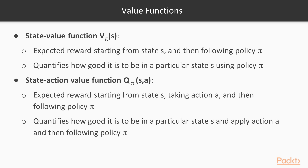There are two value functions that are pertinent. The state value function, v sub pi given s, for an MDP is the expected reward starting from state s and then following policy pi. The state value function quantifies the value of being in a particular state with a given policy. In contrast, the state action value function, q sub pi given s and a, is the expected reward starting from state s, taking action a, and then following policy pi.